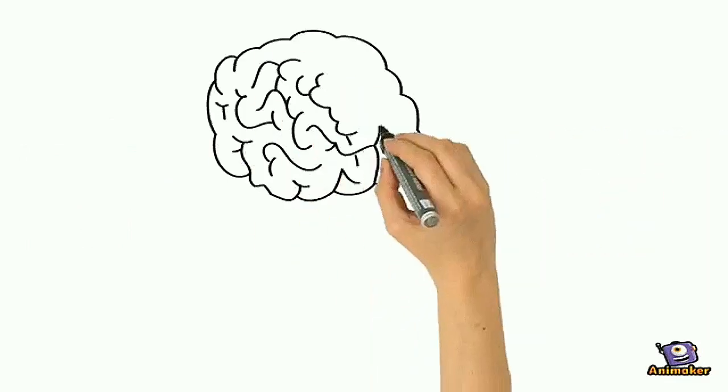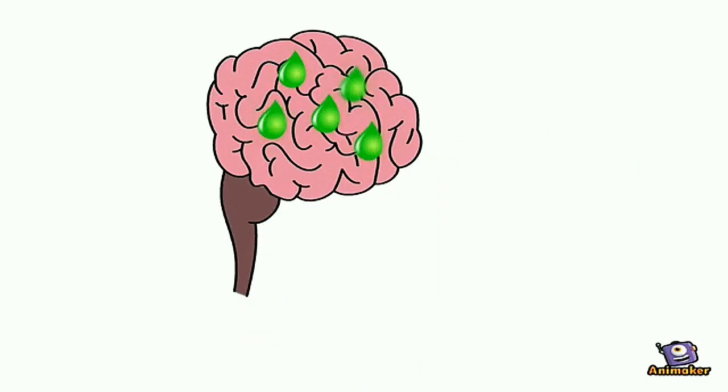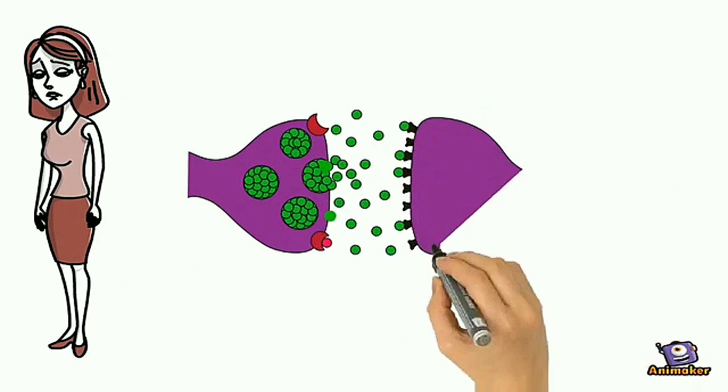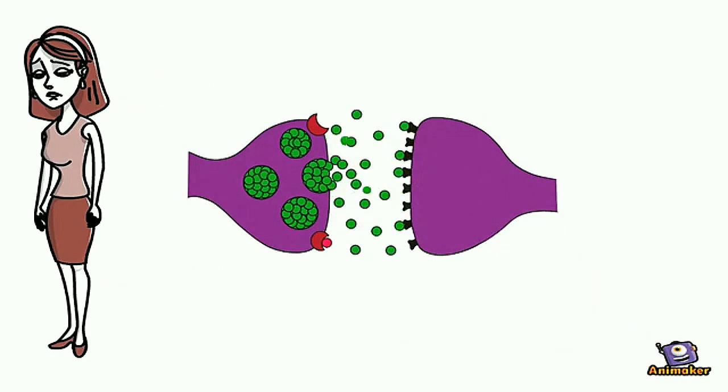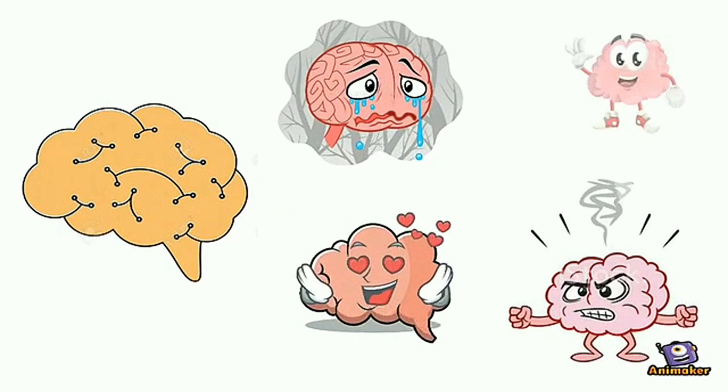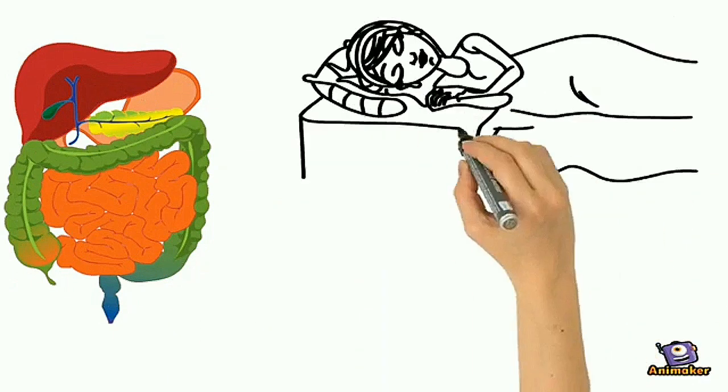At the same time, the brain releases serotonin that causes drowsiness. Serotonin is an important chemical and neurotransmitter in the human body. It is believed to help regulate mood, digestion, sleep, and memory.